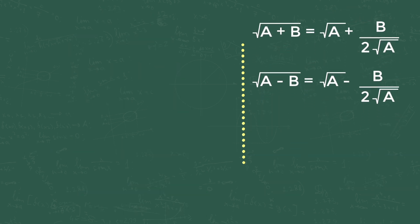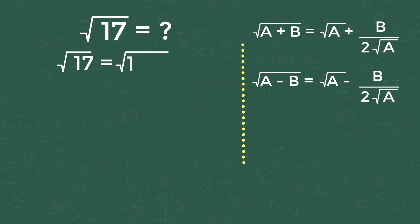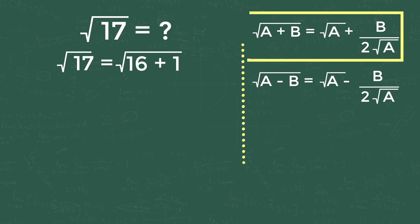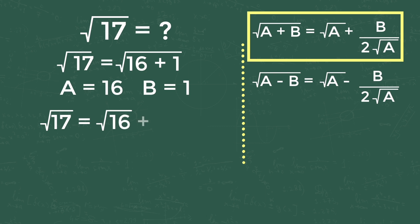Let's try another example: square root of 17. I am writing the equation as root of (16 + 1) — nothing wrong in this because 16 plus 1 equals 17. Now we apply our formula: root of (a + b) = root a plus b divided by 2 root a. Here a is 16 and b is 1.